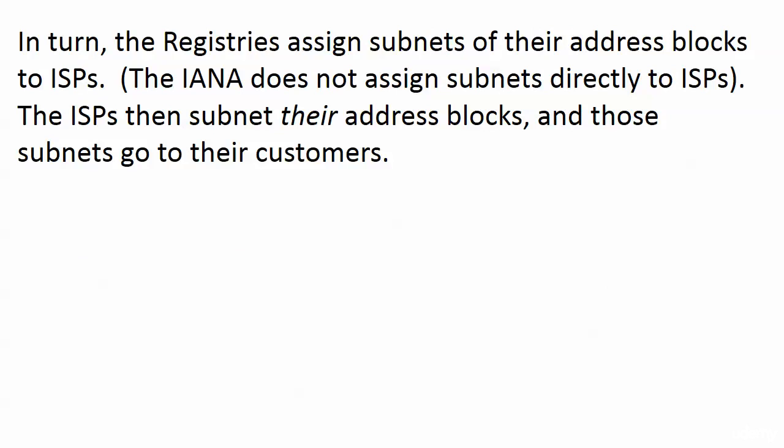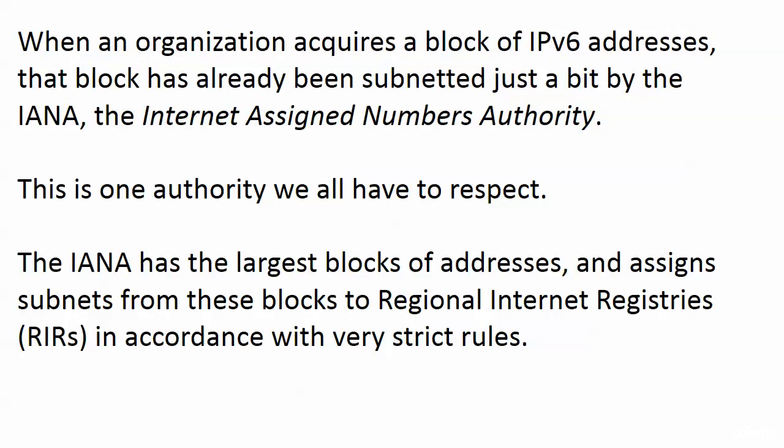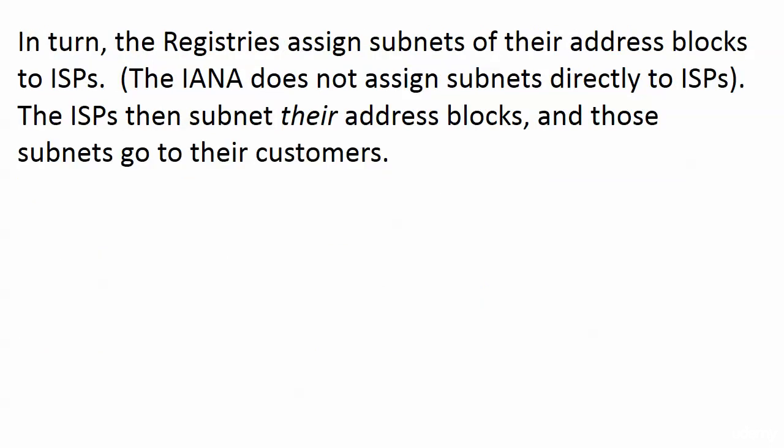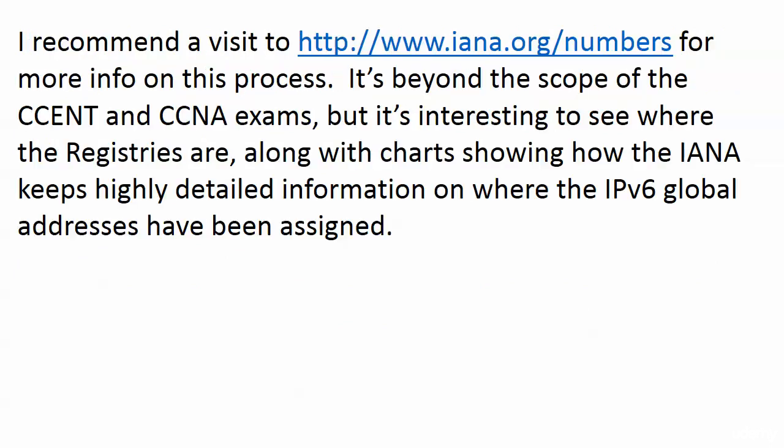The IANA does not assign subnets directly to ISPs. So the ISPs get a slice of the pie, and then they subnet the address blocks they've been given, and those subnets come to the customers. To recap: they start at the IANA, get passed down to RIRs and subnetted again, go to the ISPs who subnet them again, and finally they go to you and me — the customers.